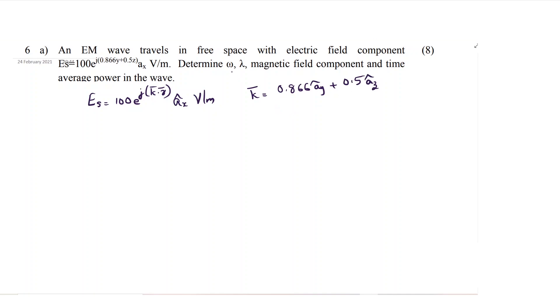Then you are asked to calculate omega, lambda, magnetic field component h, and average power. First trying to calculate omega and lambda.